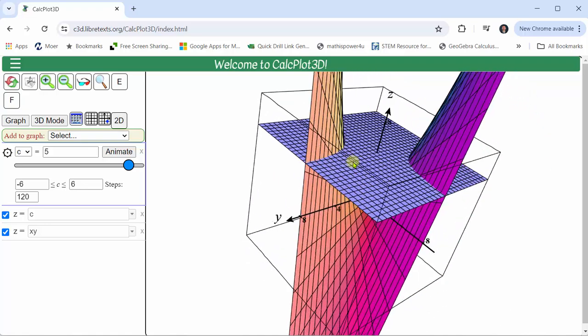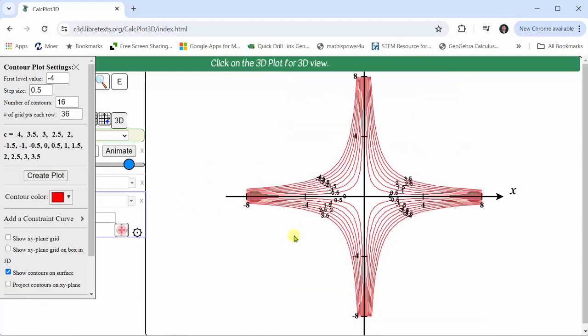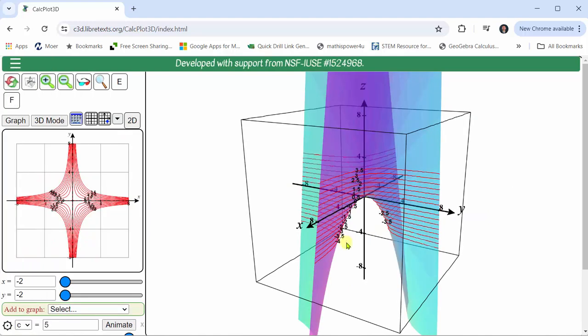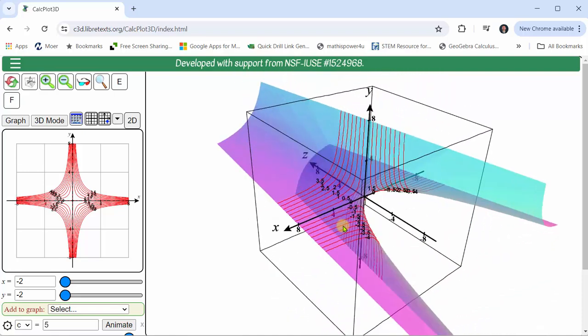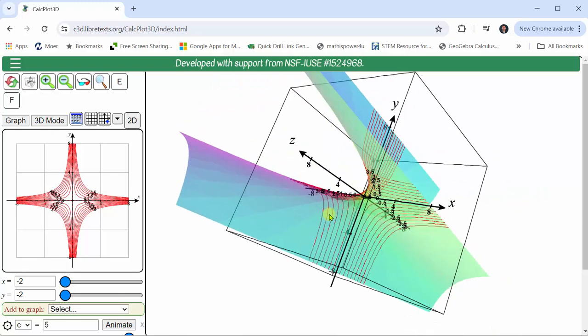Now let's look at a contour map for the given function, which is a set of level curves for the surface. Here's one possible contour map for the given surface. We can find as many level curves as we wish by changing the value of c. And now let's look at the level curves on the actual surface. We can find as many level curves as we wish by selecting different values for the constant c.